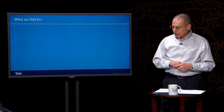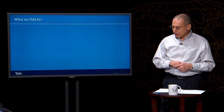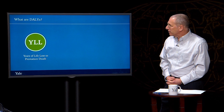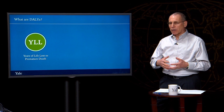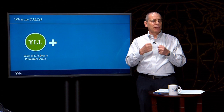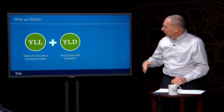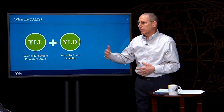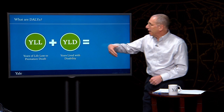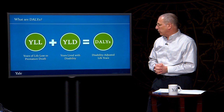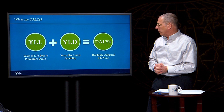Let's explore this further by looking at the two different parts that go into what a disability-adjusted life year actually means. The first part is called years of life lost to premature death — sometimes abbreviated YLL — which represents years of life lost due to dying before your time. The second part is years lived with disability, which is the number of years you live with a certain disability, weighted by severity. When you add years of life lost to premature death and years lived with disability, what you get is disability-adjusted life years, or DALYs.